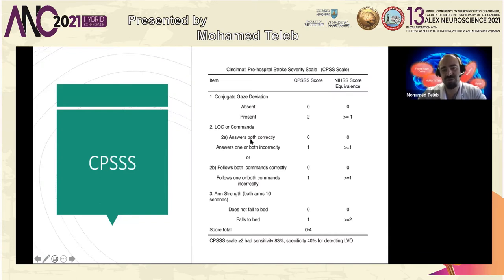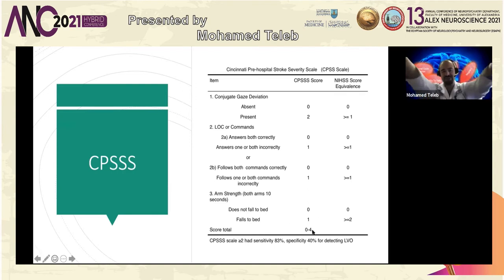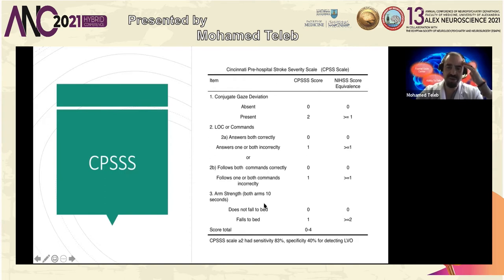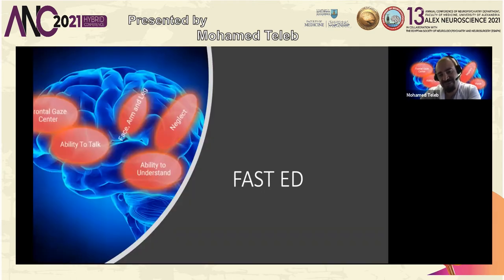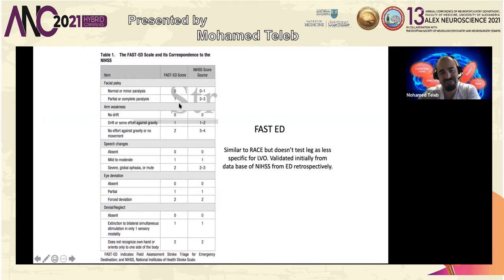Cincinnati Hospital Stroke Severity Scale tests level of consciousness, following commands, arm strength, and gaze deviation. Forced gaze gets two automatic points because it's the best predictor of large vessel occlusion. In practice, the scale uses falls-to-bed, meaning severe weakness, though in the field it's not always applied that strictly. FAST-ED tests almost the same things as VAN but doesn't test visual fields — face, arm, speech, object naming, following two commands, eye deviation for gaze, and denial or neglect.